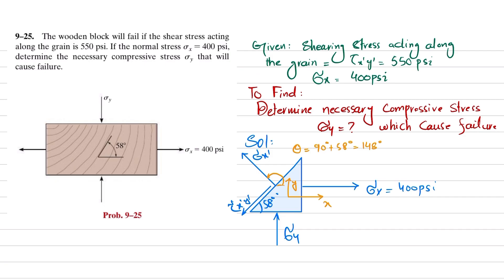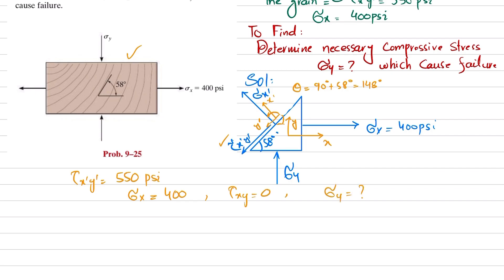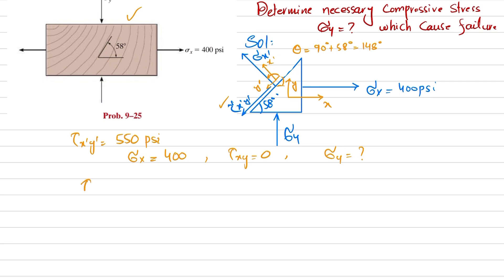The original x-y axes transform into new axes x' and y'. It is given that the shear stress along the grain is 550 psi, so tau_x'y' = 550 psi. Also, sigma_x = 400 psi, there is no shear force on the original face so tau_xy = 0, and sigma_y is unknown.